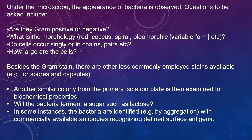Under the microscope, the appearance of bacteria is observed. The key questions are: is it gram positive or gram negative? Look at the shape — is it cocci, rods? What is the morphology? As mentioned, this includes rods, cocci, spirals, or pleomorphic forms. Is it red or purple or pink? Do the cells occur singly, in chains, or pairs — is it diplococci for example? How large are the cells?